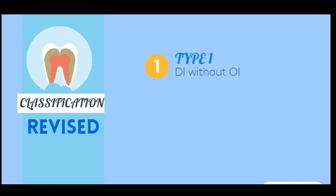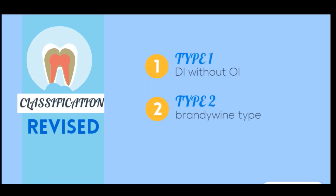Next is the revised classification. Type 1 is without osteogenesis imperfecta, which corresponds to type 2 of the Shields classification. Type 2 is the Brandywine type, which corresponds to type 3 of the Shields classification.